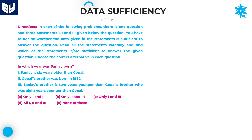See here - in which year was Sanjay born? We need to find the year in which Sanjay was born. That is the question. Now, the first option is only 1 and 2. By using the first statement, what is the information? Sanjay is 6 years older than Gopal. So Sanjay equals Gopal plus 6. It means if you know Gopal's birth year, it is easy to get Sanjay's birth year.